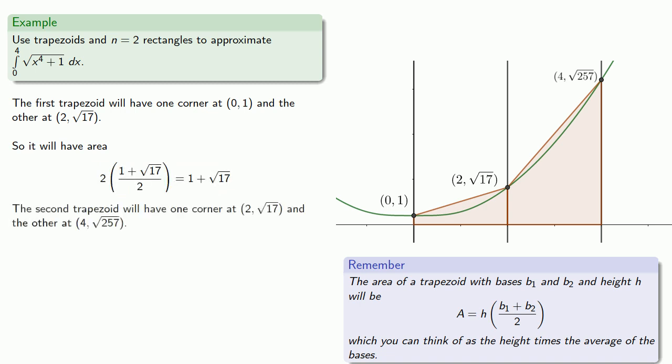The second trapezoid will have a corner at 2, sqrt(17), and the other at 4, sqrt(257). And so its area will be... And so the trapezoidal approximation will be the sum of these areas.